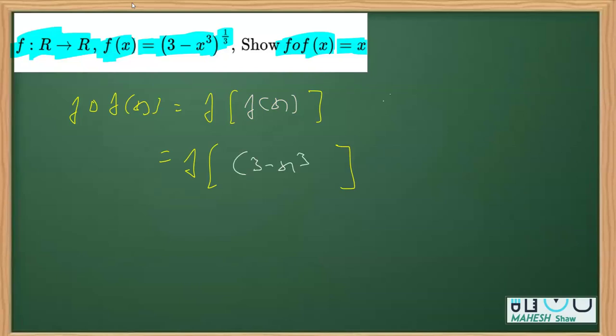Now in order to remove this f, we have to replace x with this whole thing. So I'll once again write what is f(x): f(x) is (3 - x³)^(1/3).